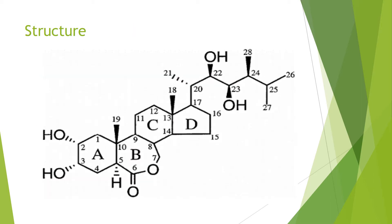Plants have over 50 brassinosteroids, which have the basic structure shown here, which is quite similar to cholesterol, with multiple rings and a slight tail on the end. Important things to notice are the B ring, which is a cyclic ester.